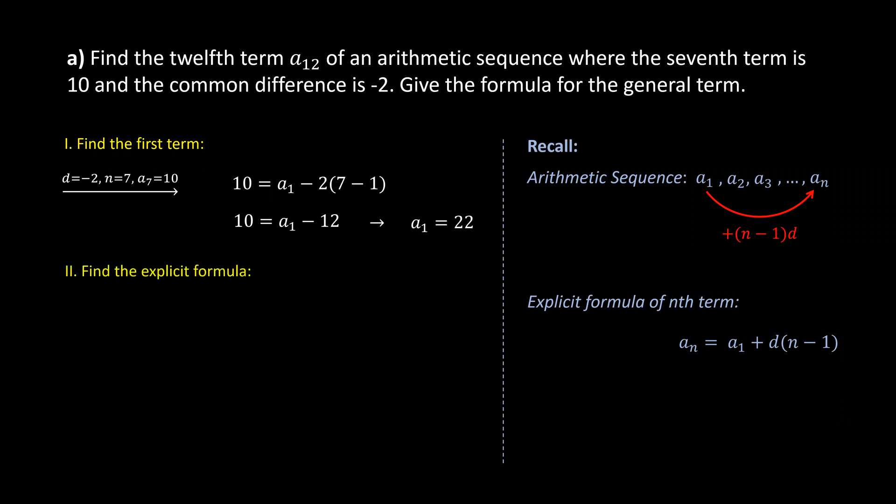Now that a1 is known and the common difference is known, we can find the explicit formula for the nth term for this sequence. Starting with the explicit formula in general form, now we can substitute a1 and d and then we'll get the explicit formula for this particular sequence to be a_n equals 22 minus 2 times n minus 1.